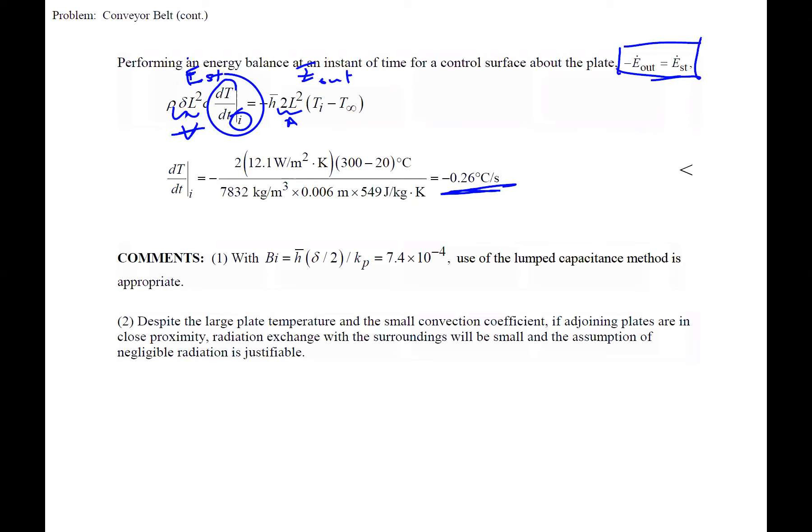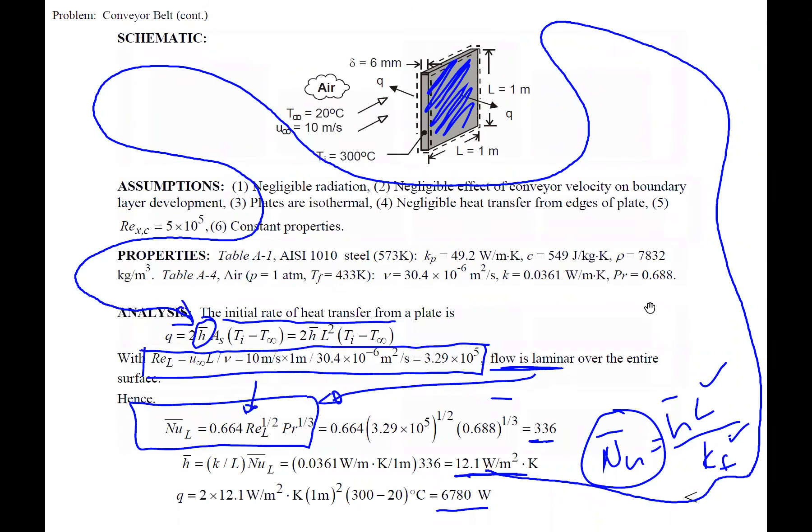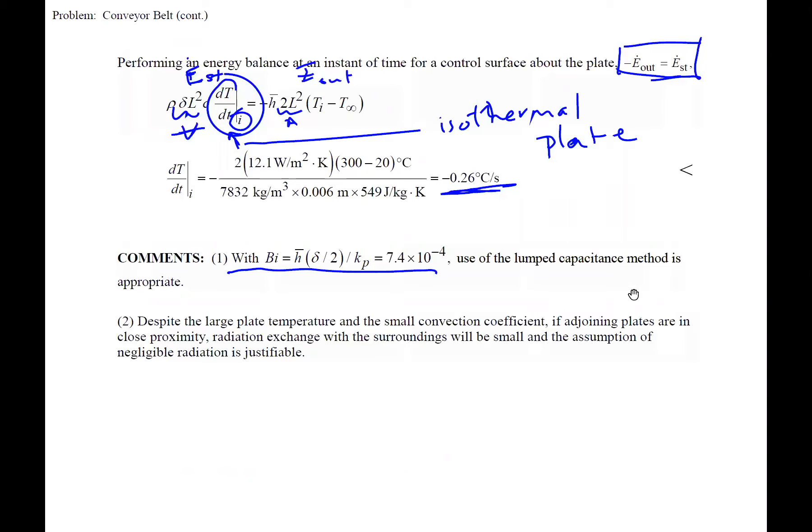And in actuality, in part B, we need to do the Biot number to check this analysis. Because right here, we're assuming an isothermal plate. We're assuming at any given time, the plate temperature is the same throughout. And you'll see it here. We're making that assumption where we need to check the Biot number. The Biot number ends up being very small, so the lump capacitance method that we're using here is valid. We're just assuming that it's all the same temperature.